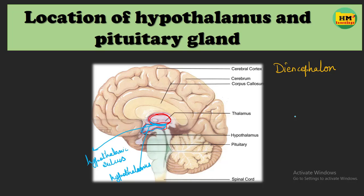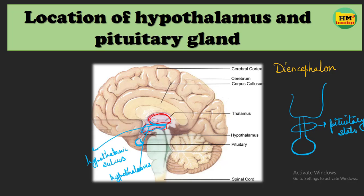Now we talk about the location of the pituitary gland. This is the hypothalamus shown in the diagram. The hypothalamus is connected to the pituitary gland. This part here is the pituitary gland — you can see it in the diagram also. And this is the pituitary stalk. The hypothalamus is connected to the pituitary gland by means of the pituitary stalk.